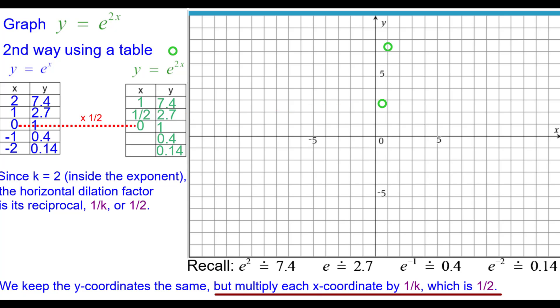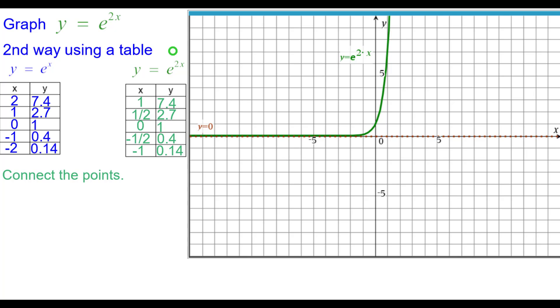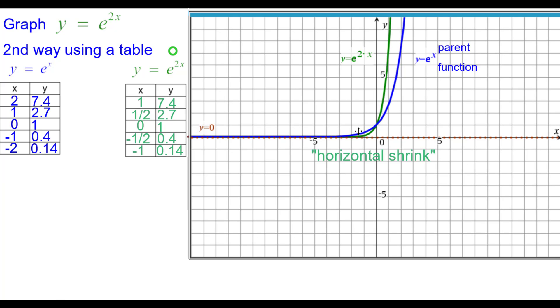Zero times 1 half is 0, 0, 1. Negative 1 times 1 half, negative 1 half up 0.4. And negative 2 times 1 half is negative 1 comma 0.14. Draw the asymptote, which is the x-axis or the line y equals 0, and connect the points. Compare that to the parent function and from blue to green it's a horizontal shrink.